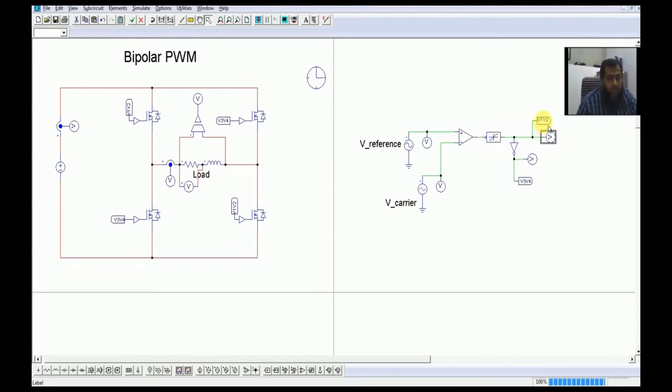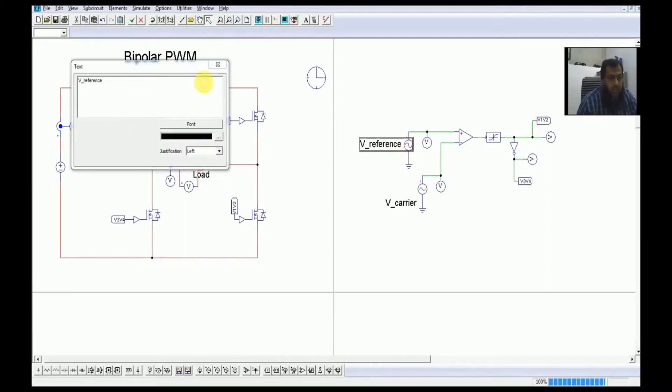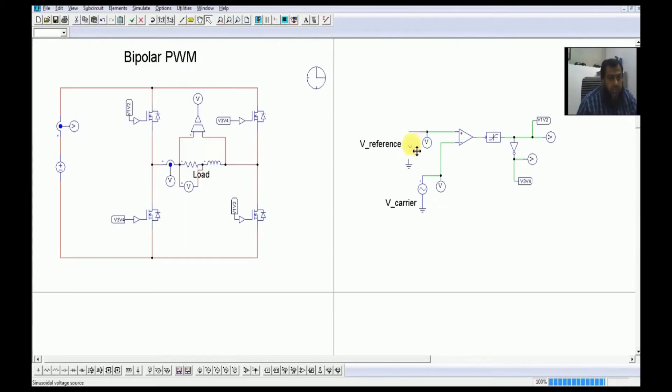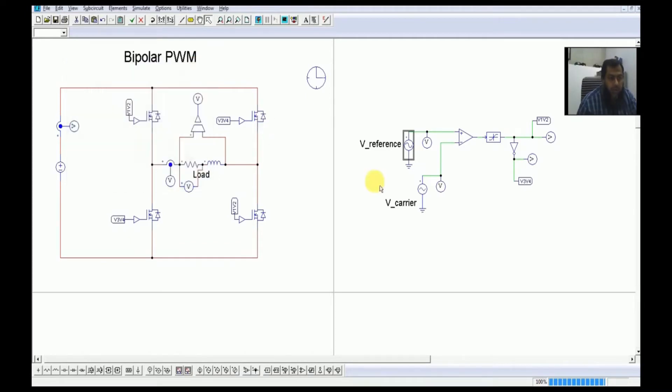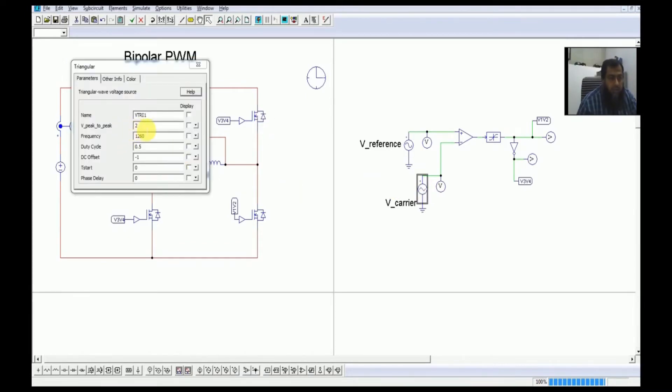We have placed a reference signal here. This reference signal provides us the sine wave which is required because MA is set to be equal to 0.8. So this V_reference is set to be equal to 0.8.